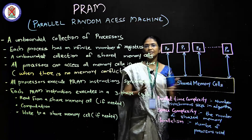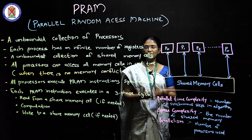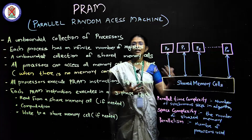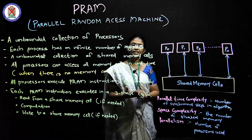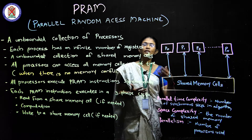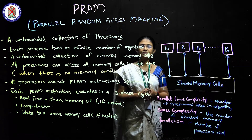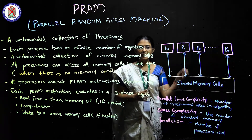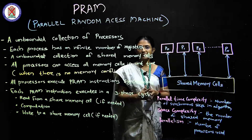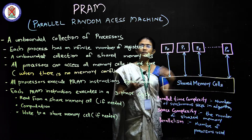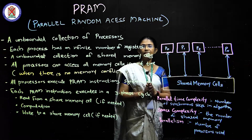We are going to discuss the limitations of the Random Access Machine. Then we are going to discuss all the limitations, and we are going to discuss the shared memory cells — that is M number of shared memory cells. Then through communications, we are going to discuss the limitations of the processor and the communication between them.